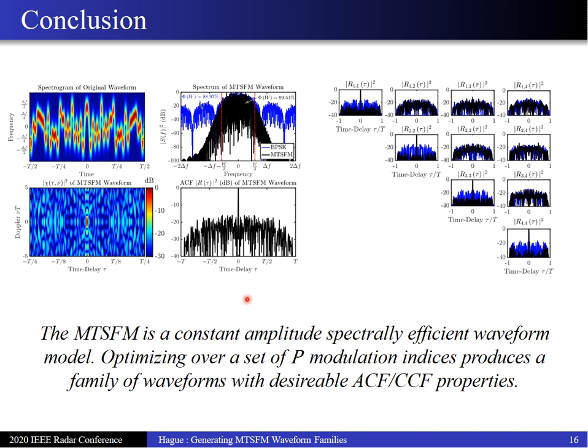To conclude, the multitone SFM is a constant amplitude, spectrally efficient waveform model. Optimizing over a set of P modulation indices produces a family of P waveforms with desirable auto and cross-correlation properties. For future work, I'd like to investigate whether this family of waveforms closely approaches or obeys some sort of Welch-like bound similar to that of phase-coded waveforms. Thank you for your time and attention — I look forward to answering your questions in the interactive session later in the conference.